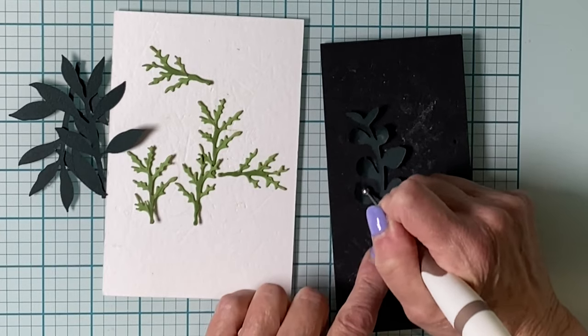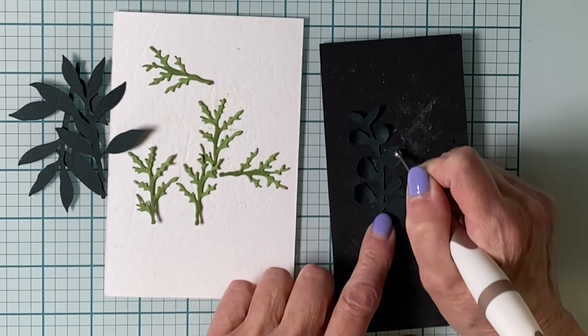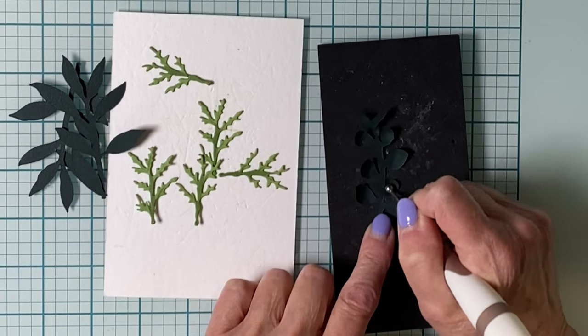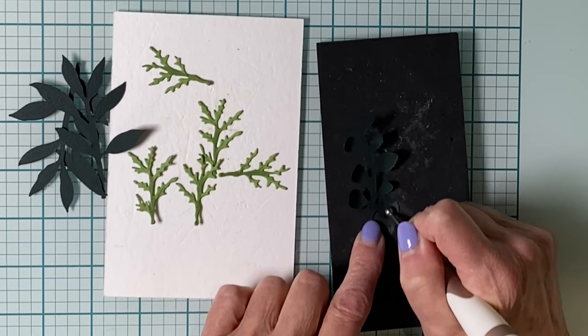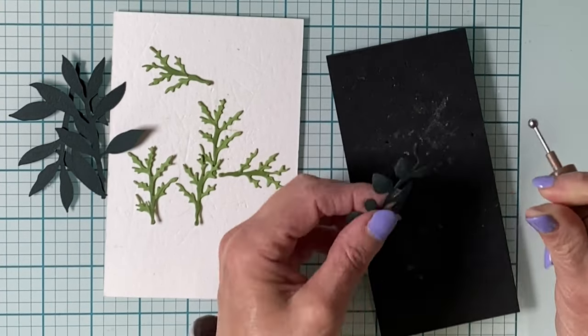This is not black cardstock, it's a dark green. The stem with the rounded leaves, I'm using the ball tool on the back and just making a circular motion to give it some shape.